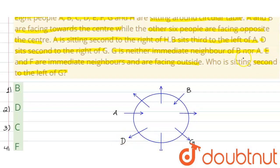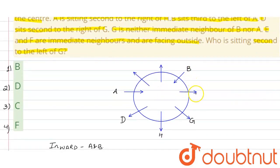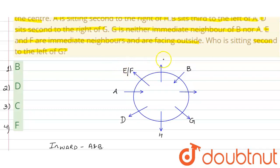E and F are immediate neighbours and are facing outside. E aur F, ye dono hi ek doosre ke bilkul paas mein baithe hain. To jo hamari khaali positions hain, B aur G ke beech mein ye ek hi position hai, matlab E aur F yahan pe nahi baith sakte. To jo rahi hui positions hain, either E or F on those two spots.